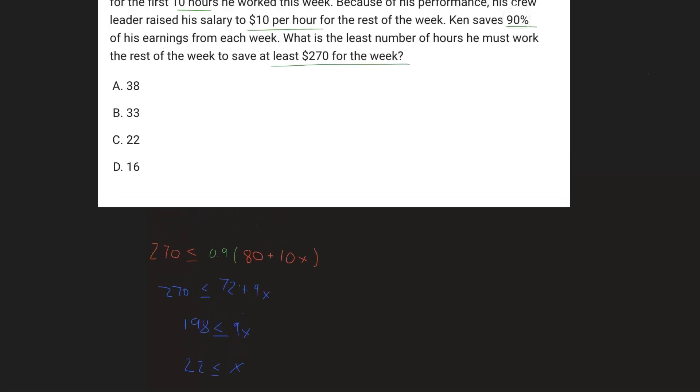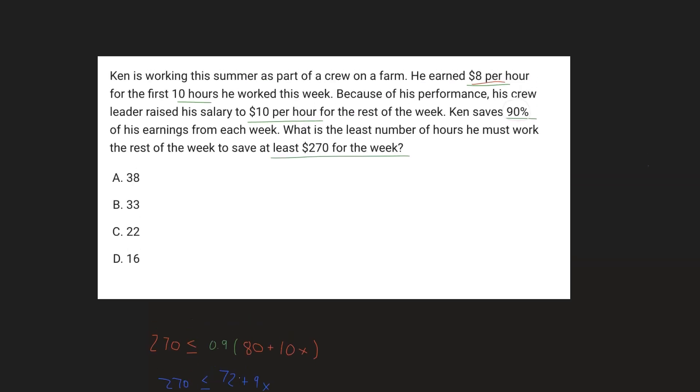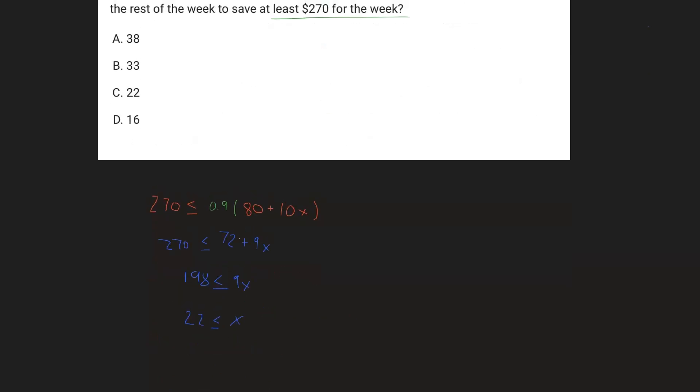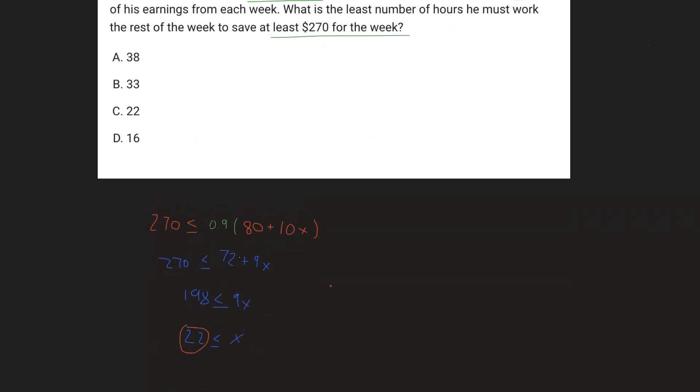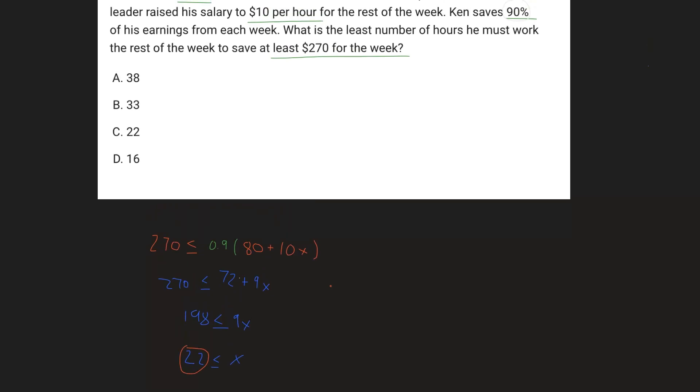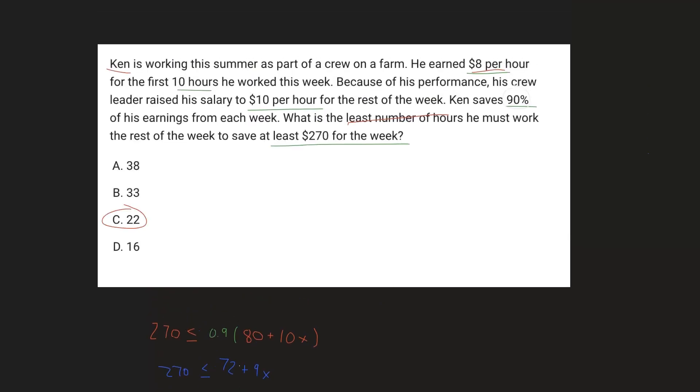All right, so what does this represent? Well, this means that in order to save at least $270, Ken will have to work at least 22 hours. But this also means that if he works greater than 22 hours, he'll save more than $270. But we just want to find the number of hours that it'll take him to save at least $270 working the least number of hours. And the least number of hours in our case is right here, 22 hours, because that's the minimum that he has to work. And therefore our answer choice is going to be C.